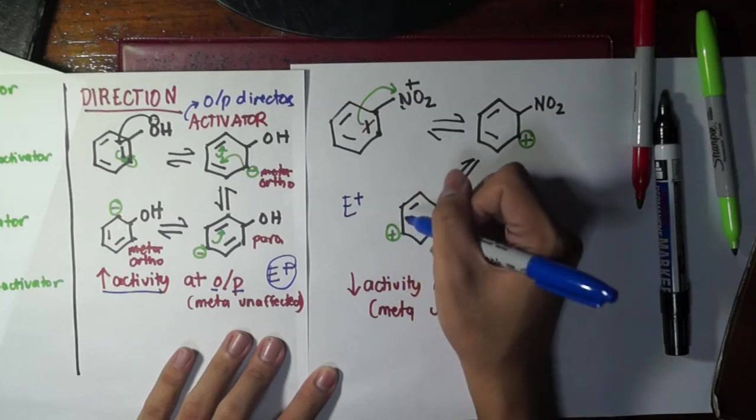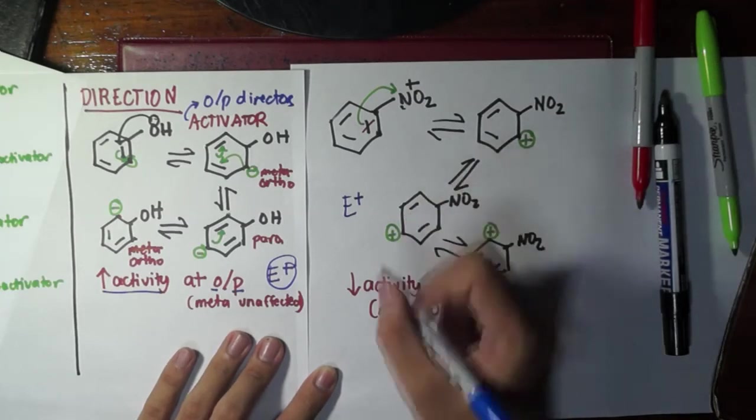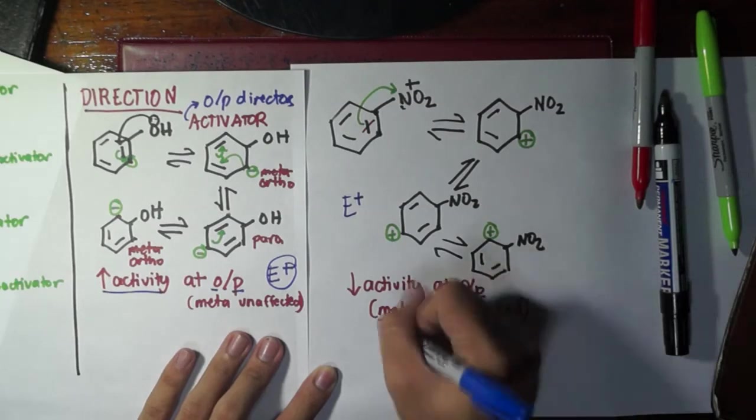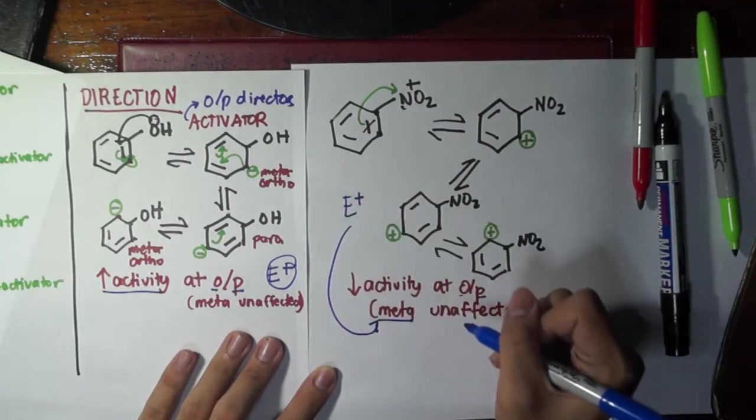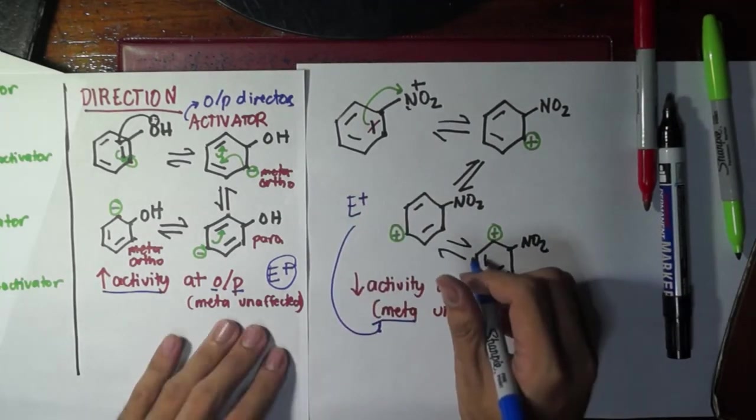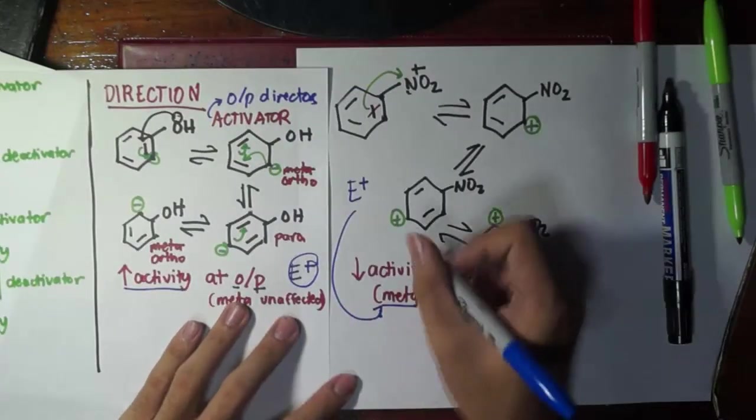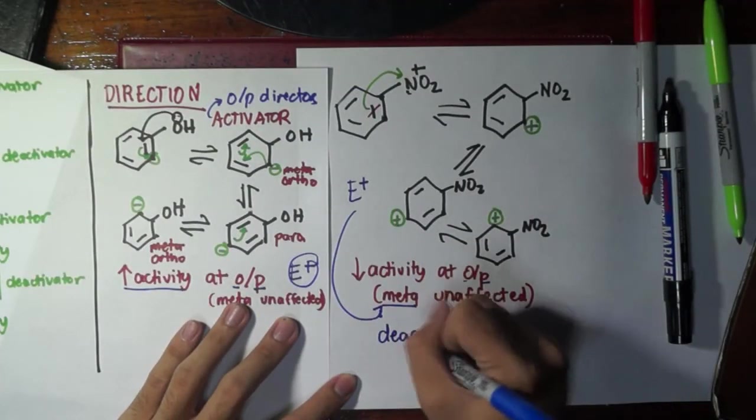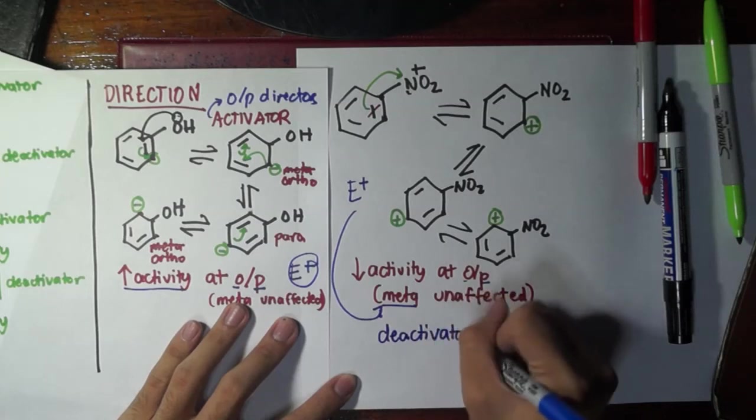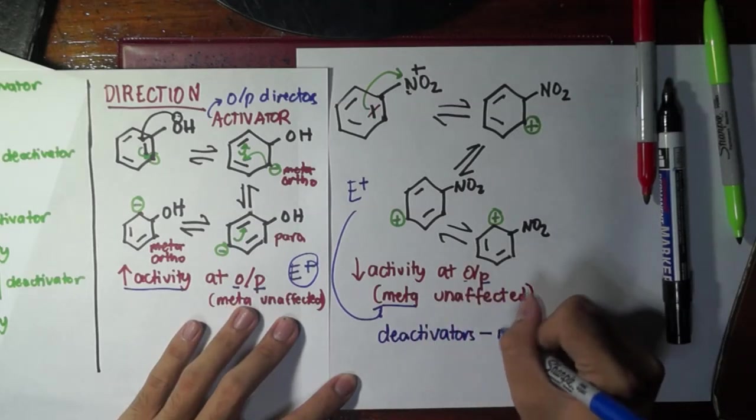Now would an electrophile attack these positive sites? Remember electrophiles like electrons, and if it would go to a site that is also positive, it would not like it. So where would it go instead? Instead of going ortho or para, this time it would go meta. This just means that most of the deactivators are meta directors.